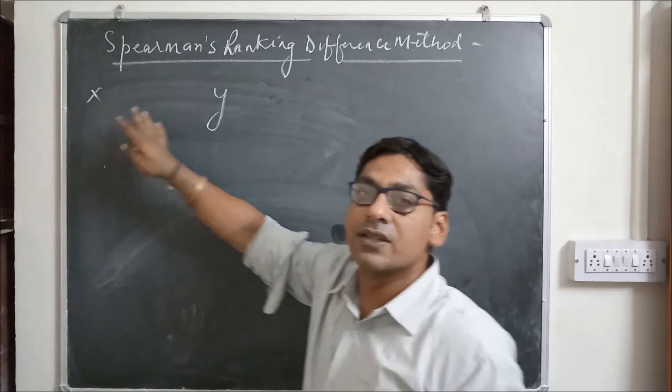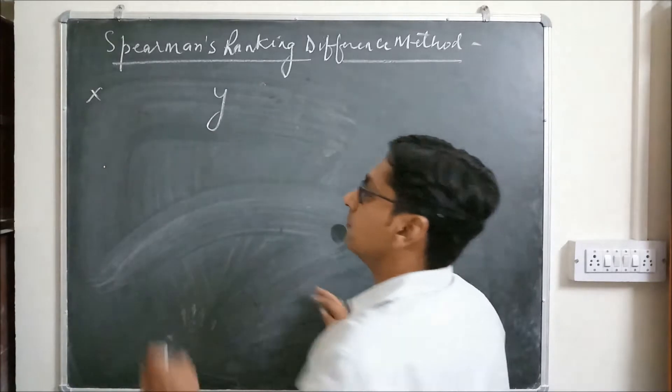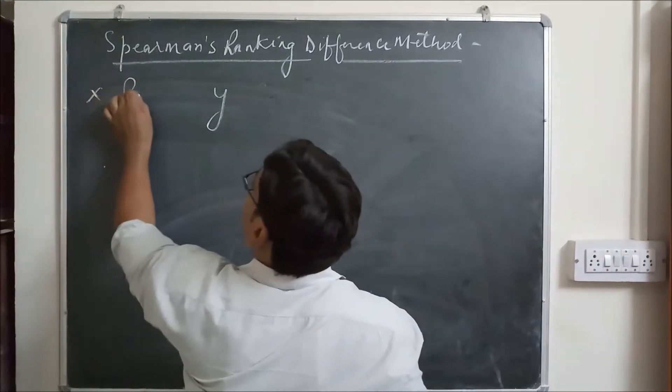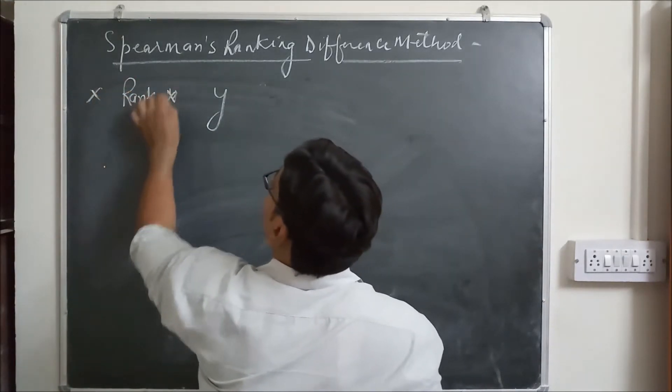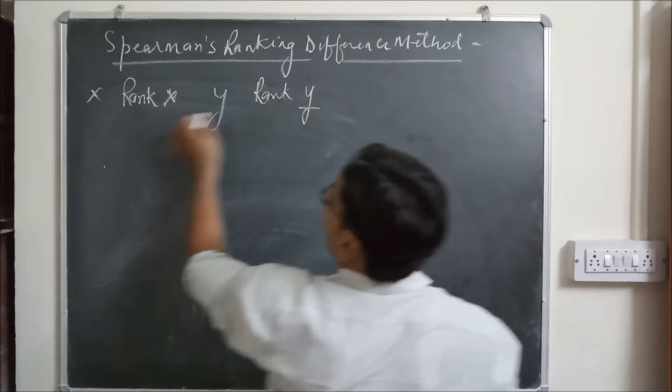Whether it is marks in statistics, marks in economics, whether it is the age of husband, age of wives, you just first of all give rank X and rank Y to these data.